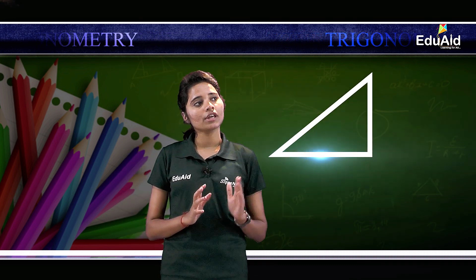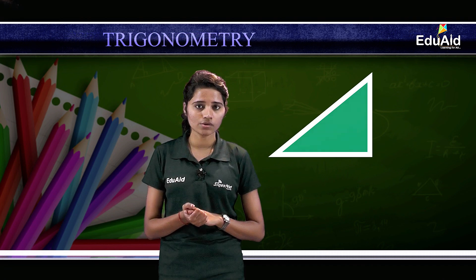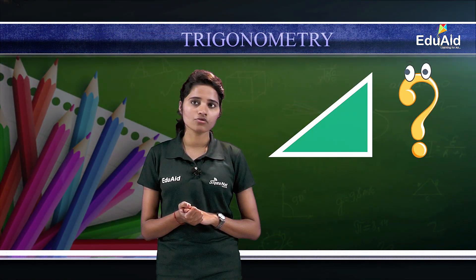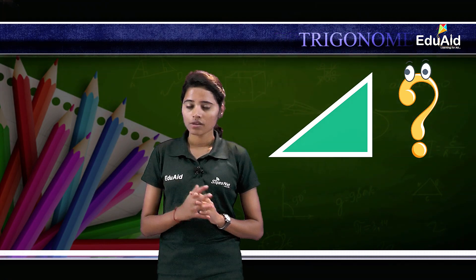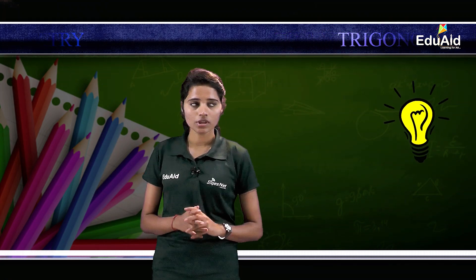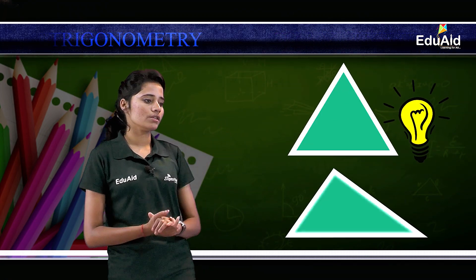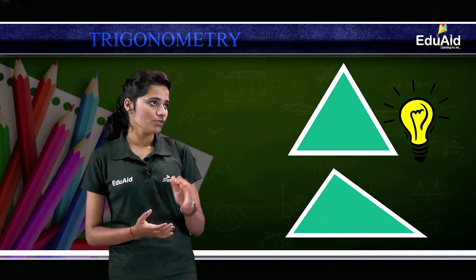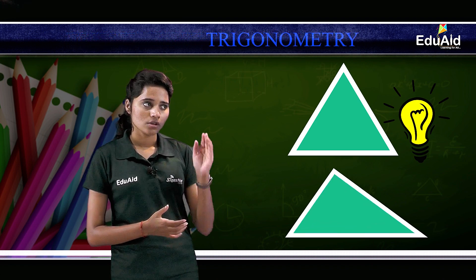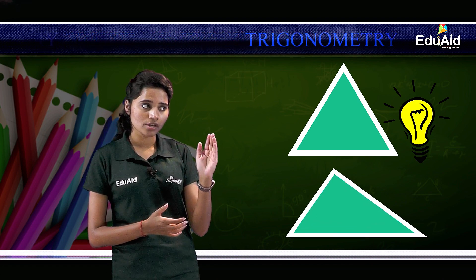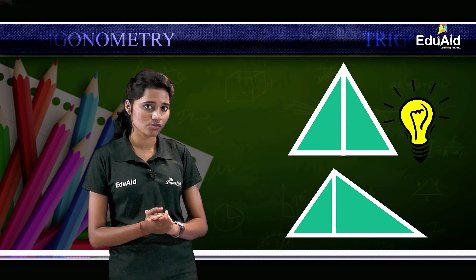We are learning about right angle triangles and not any other types of triangles. So why is it the case that under trigonometry we are going to study only about right angle triangles? That is because any triangle — consider this triangle or this triangle. You see these are not right angle triangles. Any triangle can be broken down into right angle triangles.